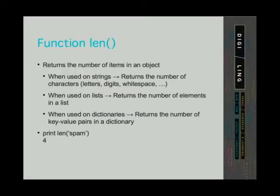One very useful function we can use on strings but also on some other data types is the len function. Len comes from length. This function returns the number of items in an object. Items in a string are characters, so when the len function is called on a string, it returns the number of characters in the string. We will also use this function on lists and dictionaries. When used on lists, it returns the number of elements in a list. And when used on dictionaries, it returns the number of key-value pairs.